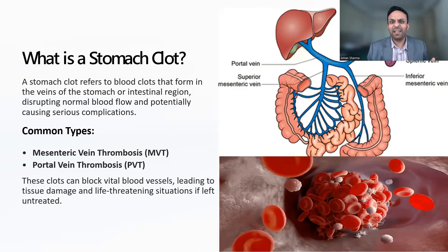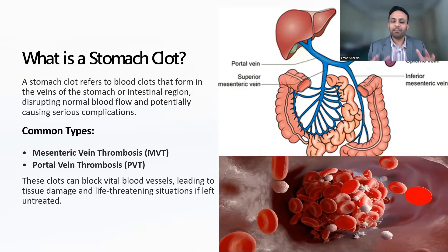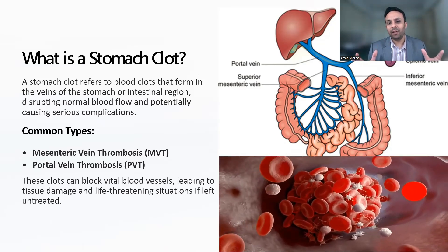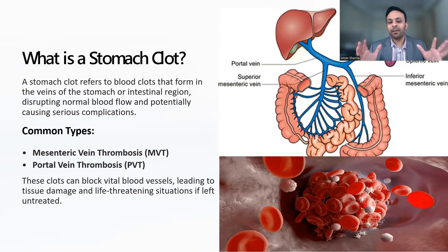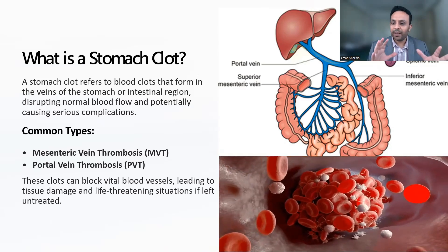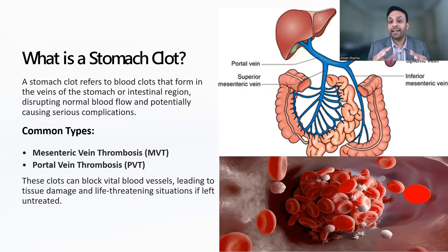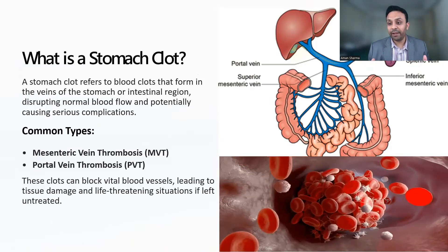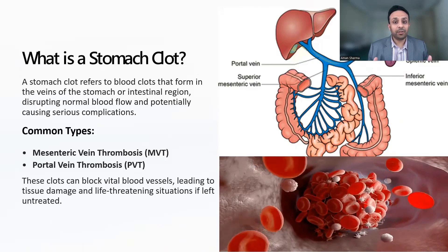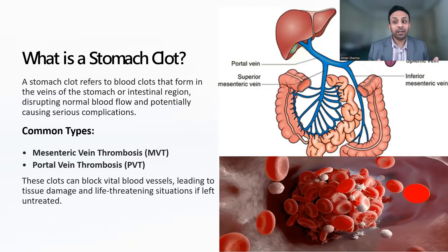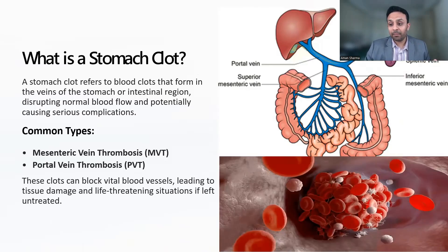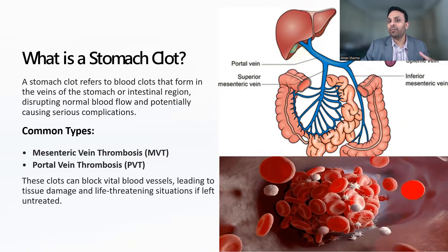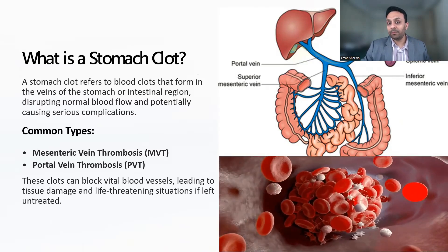When we talk about the mesenteric veins, they basically supply all of your bowel. That's why a clot in these blood vessels can be potentially life-threatening. It can cause tissue damage, and it can even leave you with a condition where you have to have the intestines removed.